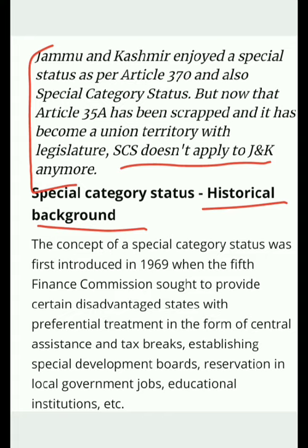The concept of Special Category Status was first introduced in 1969 when the Fifth Finance Commission sought to provide certain disadvantaged states with preferential treatment in the form of central assistance and tax breaks, establishing social development boards, reservation in local government jobs, education, and institutions. In simple terms, the Finance Commission recognized that some states were suffering from underdevelopment due to low infrastructure or geographical barriers.